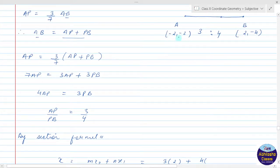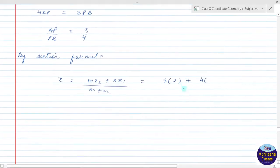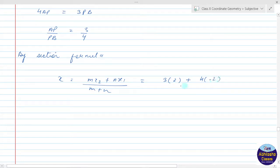n is 4, so we have 4×x₁. Now x₁ is -2, so we get 4×(-2) over (m + n), that is 3 + 4.